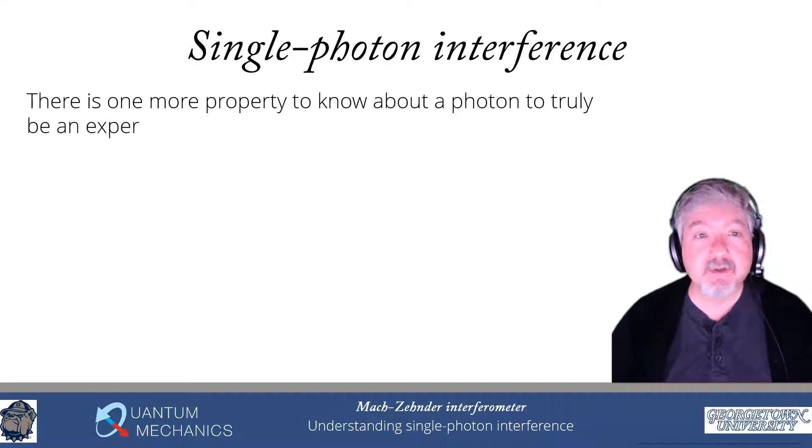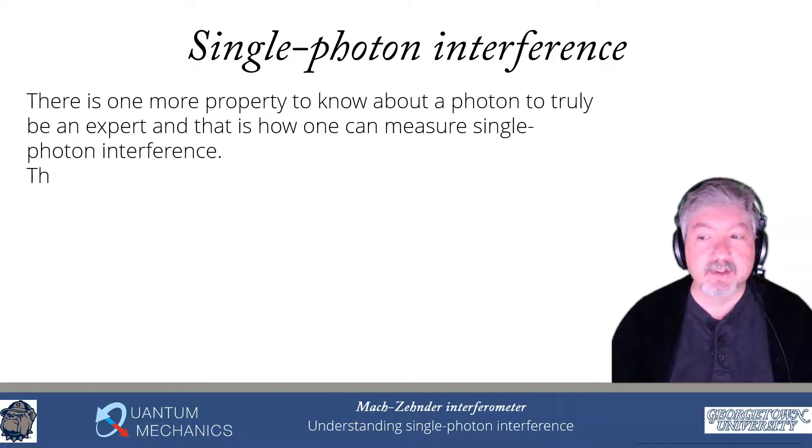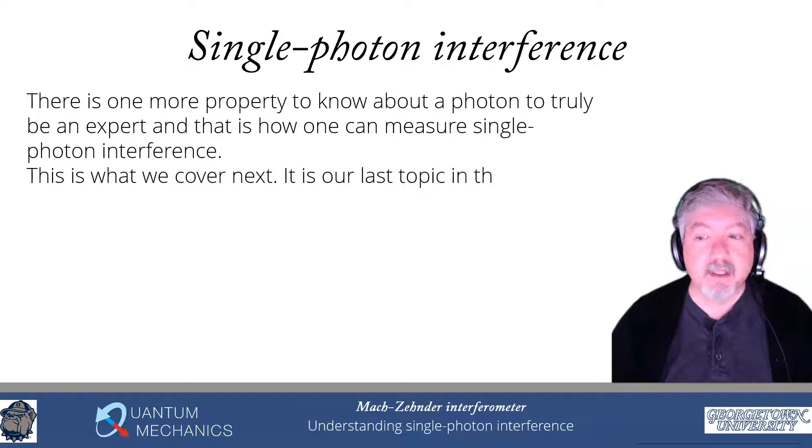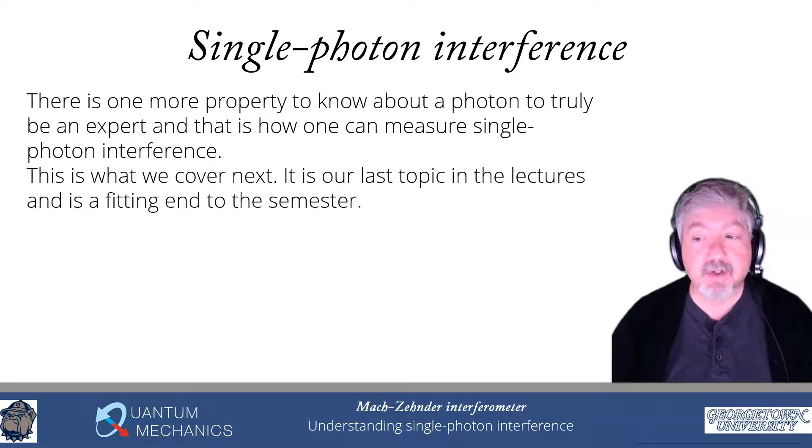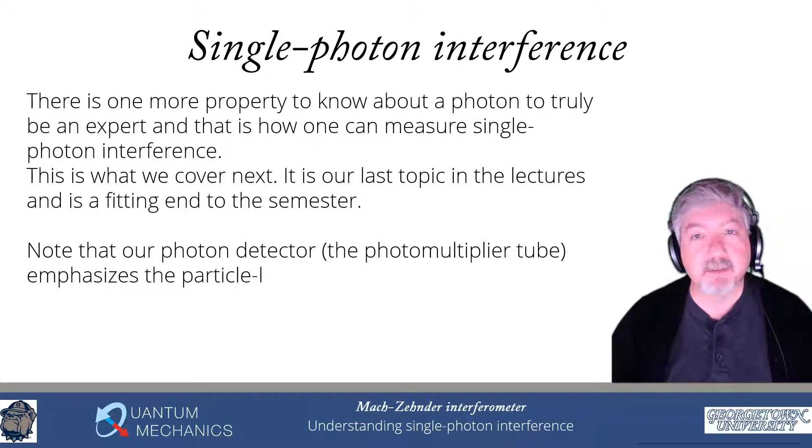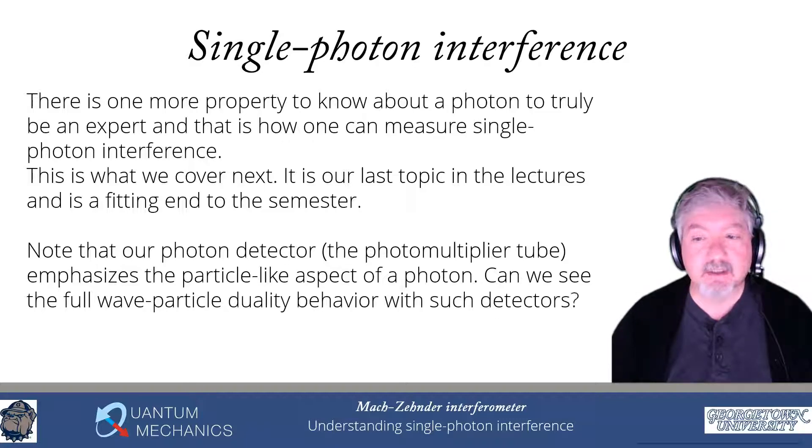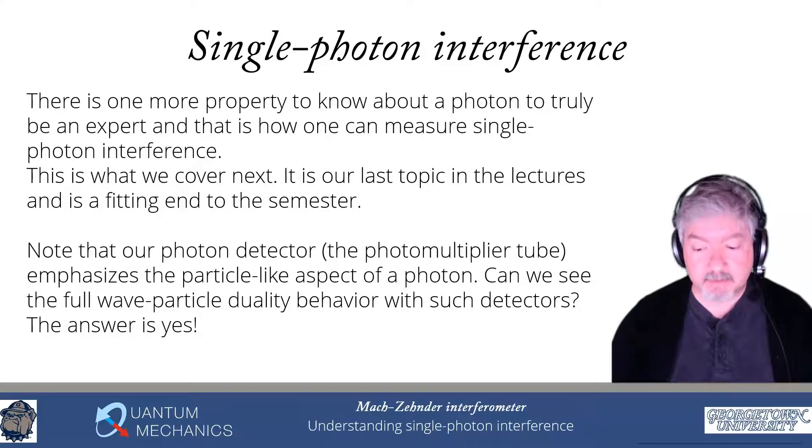The last thing I want to talk about is single photon interference. It is the final property you really need to know to understand what a photon truly is. I'm going to illustrate for you how we can actually measure single photon interference. It's the last topic that we have in the lectures of this course. I think it's a rather fitting end, having a clear discussion on wave-particle duality. Notice that our photon detector, which is the photomultiplier tube, is really emphasizing the particle aspect of the photon. It simply counts photons, and it acts as if each photon comes in as a single lump, and we detect the lump as it is incident on the detector. How do we see this full wave-particle duality using detectors that are emphasizing the particle aspect of the photons? Can we do it? The answer is actually yes, we can. Let me show you how.